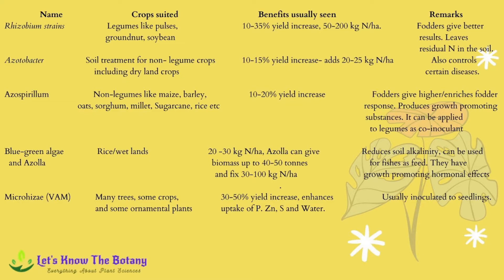Azospirillum may also be useful for non-leguminous plants like maize, barley, oats, sorghum, millet, sugarcane and rice. Blue green algae and Azolla are useful for rice or wetland crops, increasing 20 to 30 kg nitrogen per hectare. Azolla alone can give biomass up to 40 to 50 tons and fix 30 to 100 kg nitrogen per hectare, and also helps reduce soil alkalinity. Mycorrhizal fungi are useful for many trees, crops and ornamental plants, increasing yield by 30 to 50 percent and enhancing uptake of phosphorus, zinc, sulfur and water; they are usually inoculated to seedlings.